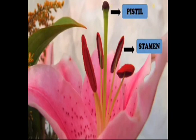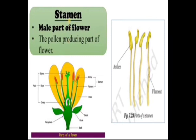The pistil is the female reproductive part of the flower and stamen is the male reproductive part. The male part of the flower is called stamen — it is the pollen-producing part. Anther and filament together are called stamen.